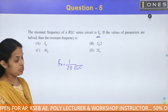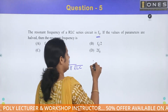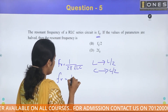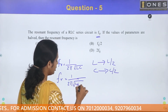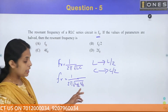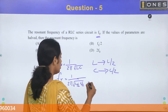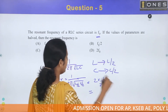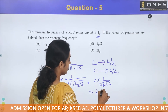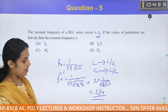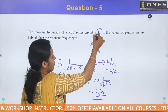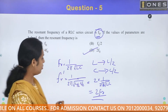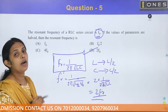Substituting L/2 and C/2 into the formula: F_new = 1 / (2π × √(L/2 × C/2)) = 1 / (2π × √(LC/4)) = 1 / (2π × (√LC)/2) = 2 × (1 / (2π√LC)) = 2 × F0. So the new resonant frequency is 2F0. The answer is Option D. The RLC resonant frequency formula is 1 / (2π√LC).